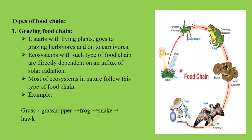Such type of food chains are directly dependent on the influx of solar radiation — when this chain will run, how much it will run, whether it will collapse, all depends on how much energy is being transferred. This is primarily and directly dependent on solar energy, because when plants grow, that food is initiated and energy transfers through different levels. Most ecosystems are the grazing type of food chain.